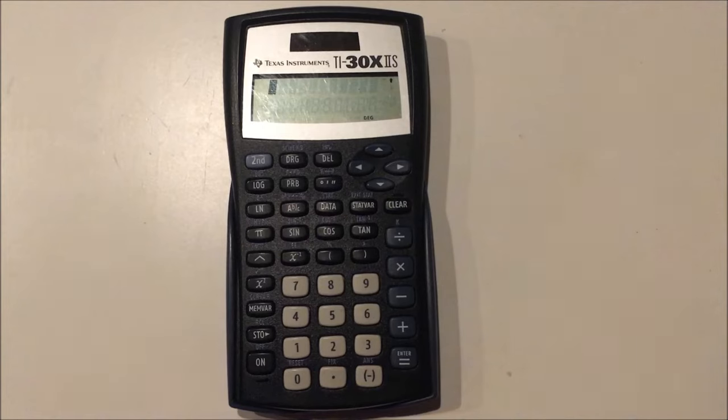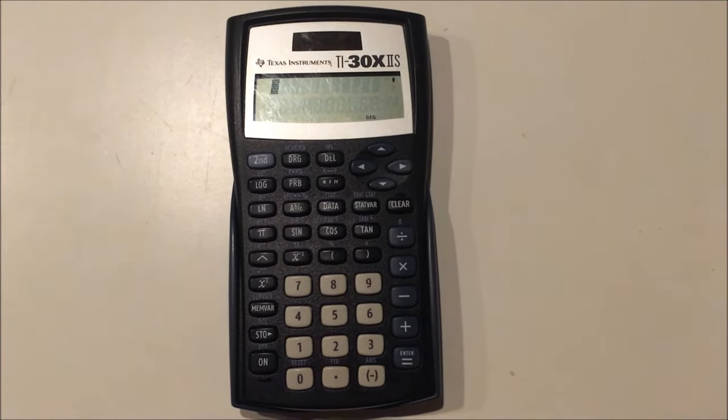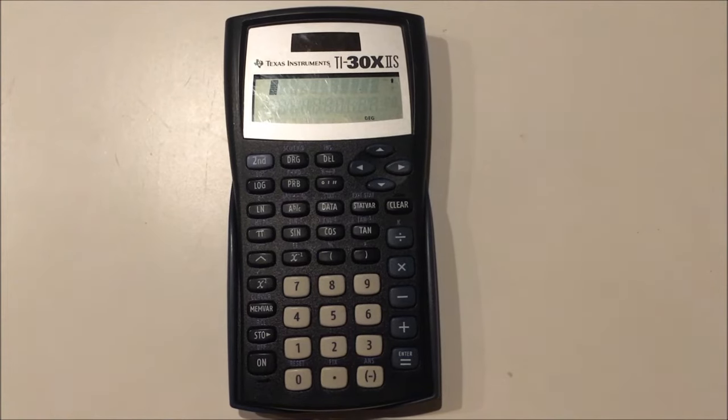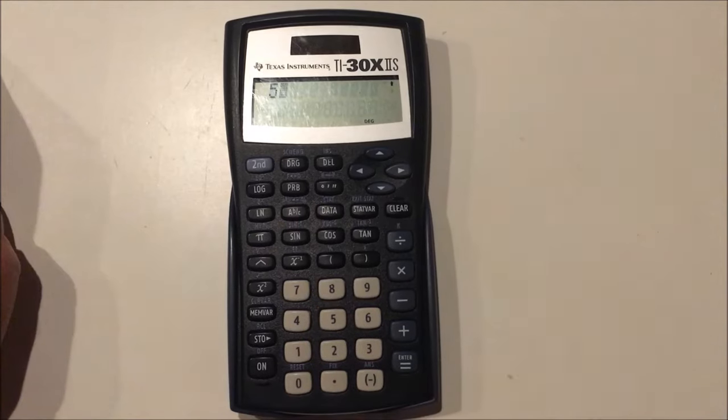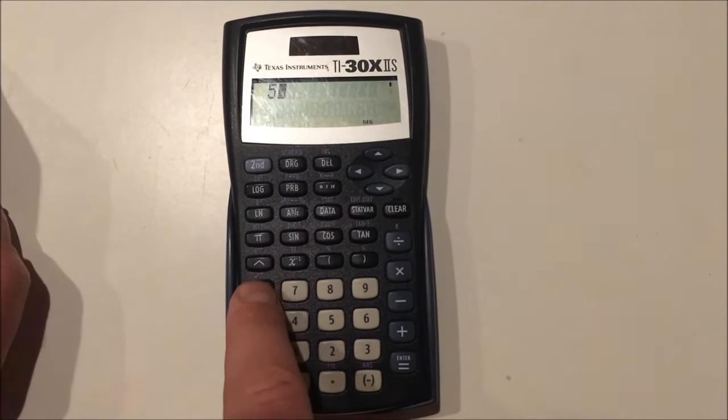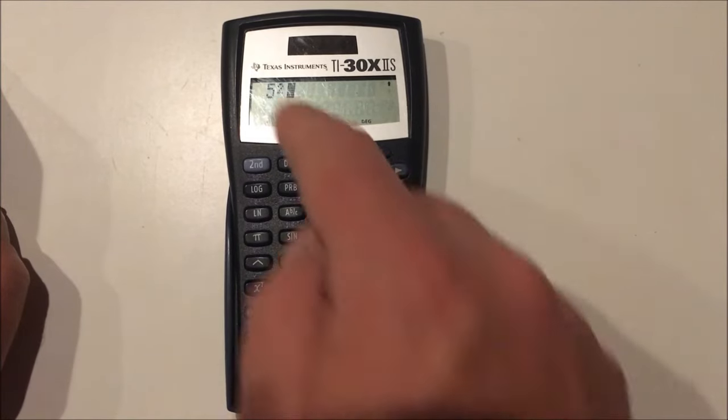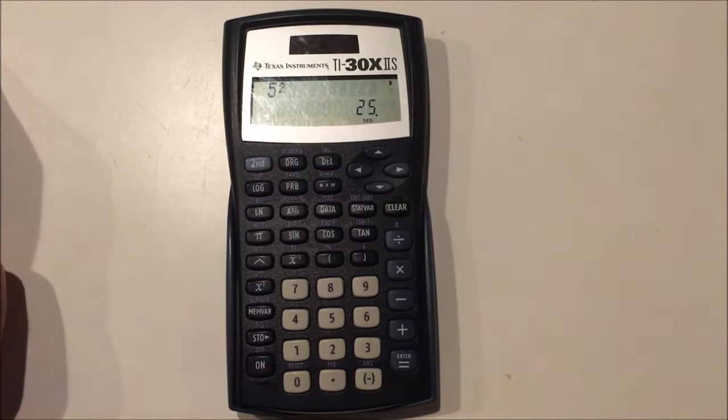So let me show you a few other basic operations you would do with a scientific calculator, such as exponents, radicals, and scientific notation. So let's start with exponents. If you simply want to square a number, you would place the number in the calculator first, and then press this button, x squared. And you'd see a little 2 show up as an exponent, and you press enter, you get the known result 25.